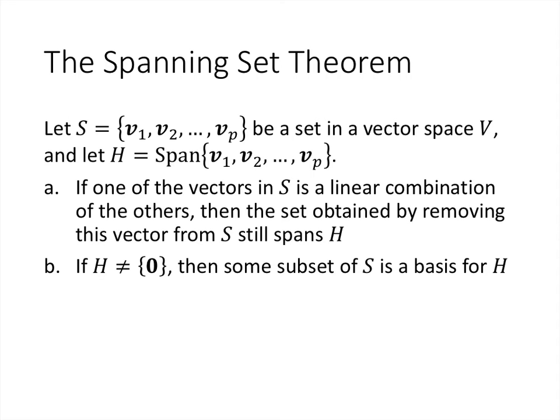This idea of eliminating unnecessary vectors is the primary idea behind the Spanning Set Theorem. It says: suppose S is a set of vectors in vector space V and H = Span(S). If one of the vectors in S is a linear combination of the others, then removing that vector still leaves a set that spans H. Furthermore, if H is non-trivial, some subset of S forms a basis for H. We can eliminate vectors one by one until the remaining vectors form a basis.